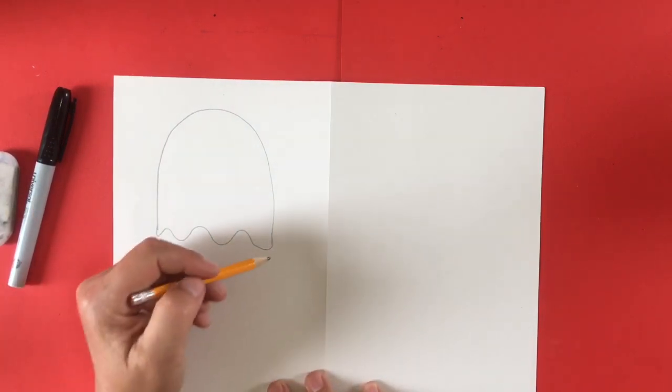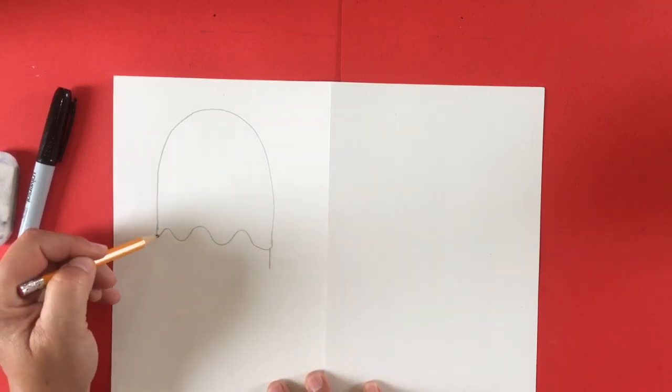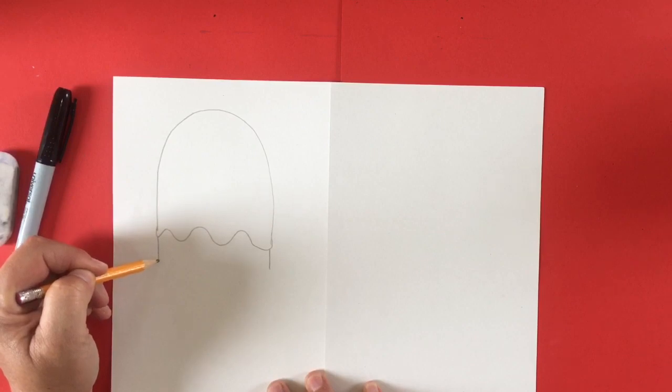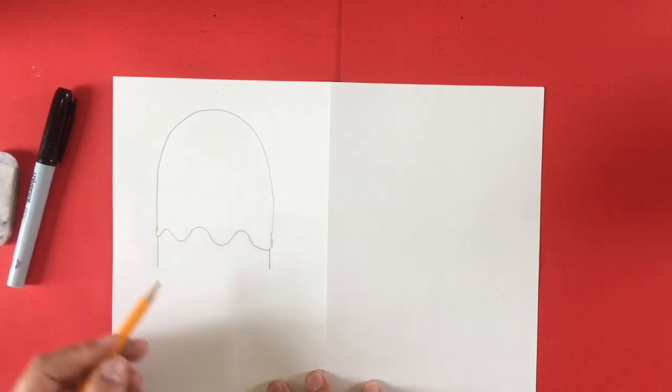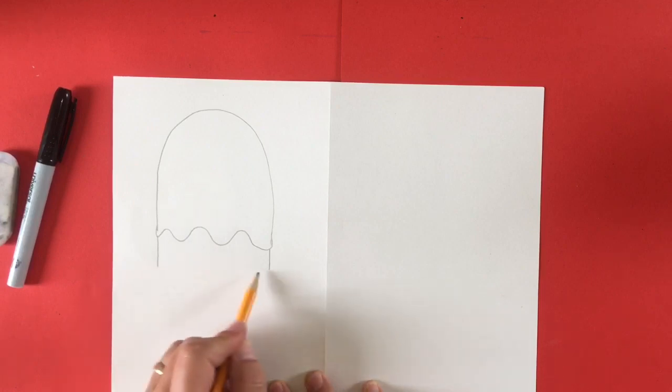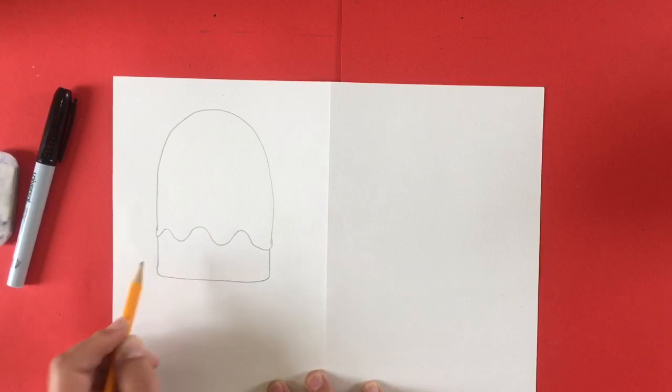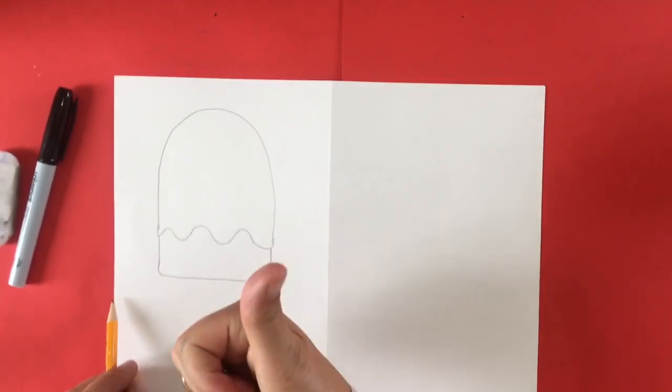The next line we're going to do is bring a short line coming down on either side of our popsicle, about an inch line coming down, and then we're just going to meet those two lines up by drawing a straight line across. That is the bottom of our popsicle. I gave the lines just a little bit of curve because my popsicle is going to have curved edges.